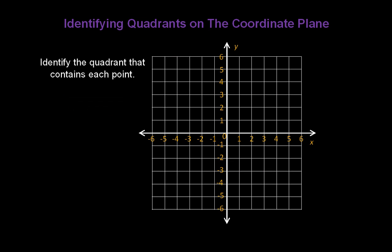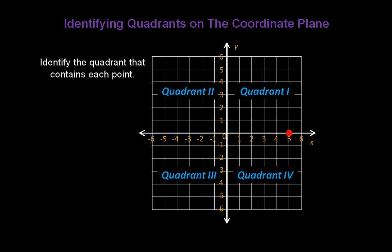Let's do one more. What quadrant is this point located in? I tried to throw you a curveball there. It's not actually in a quadrant, but it is between two quadrants. Do you remember which two quadrants it's between? That point is located between quadrants 1 and 4.